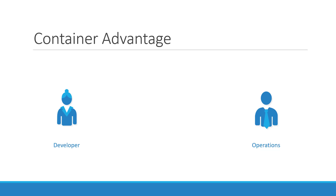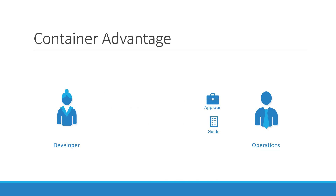Traditionally, developers developed applications and then handed them over to the Ops team to deploy and manage in production environments. They did that by providing a set of instructions, such as information about how the host must be set up, what prerequisites are to be installed, and how the dependencies are to be configured. The Ops team uses this guide to set up the application. Since the Ops team did not develop the application on their own, they struggle with setting it up, and when they hit an issue, they work with the developers to resolve it.